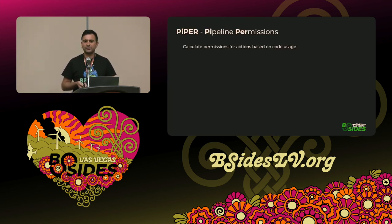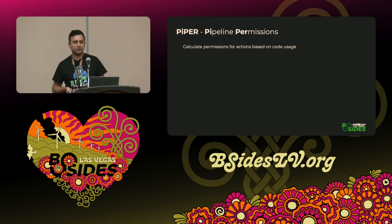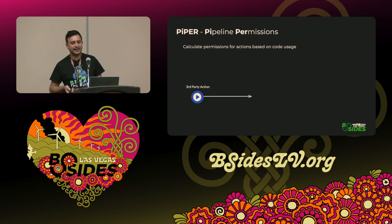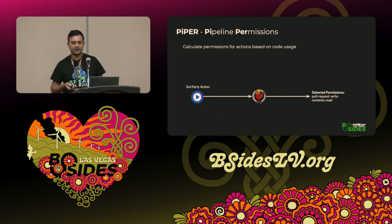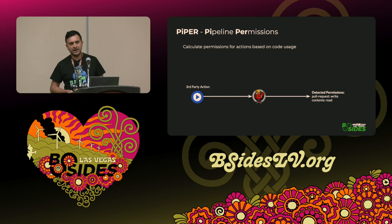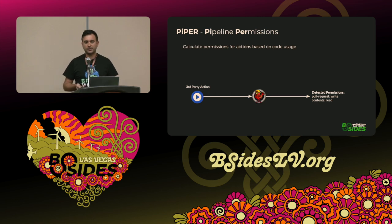So I decided to develop a tool that does exactly that, called Piper — it's short for pipeline and permissions. What it does: it can take any third-party action, perform a static code analysis on the code, and output the exact permissions it needs — no more, no less — by analyzing the usage of the code against the repository.